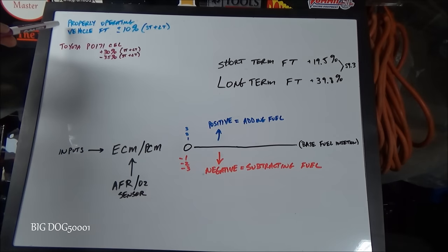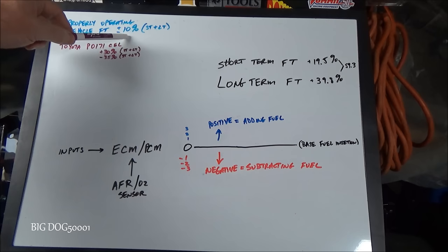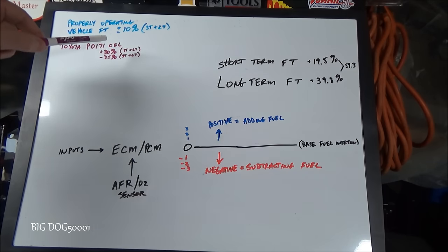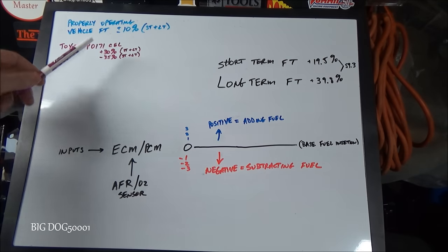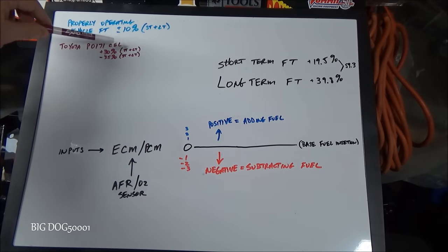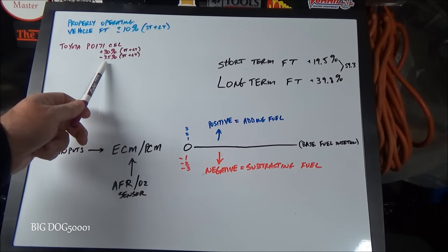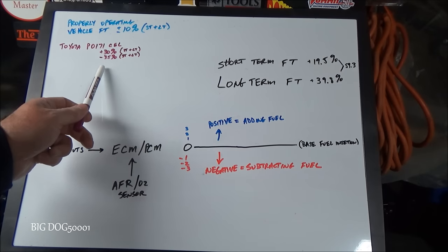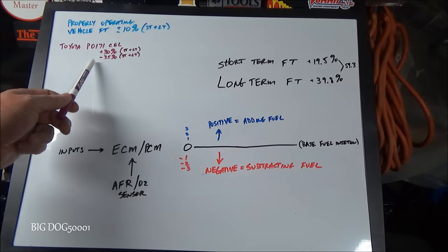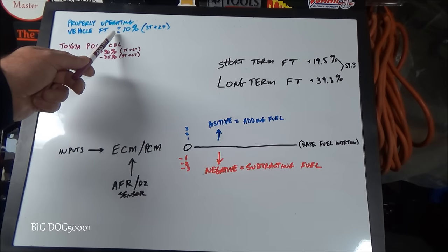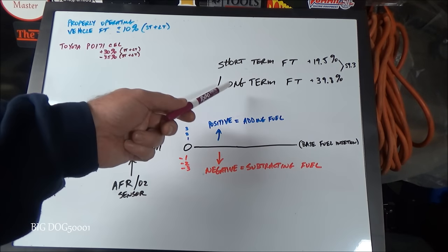On a properly operating vehicle, you should add the long-term and short-term together and get plus or minus 10% — that's a good operating vehicle. In the case of this Toyota, anything above 30% combined is going to set a check engine light, and anything below minus 35% will also set one. We're at 59.3%, so that's going to set a check engine light no matter what.